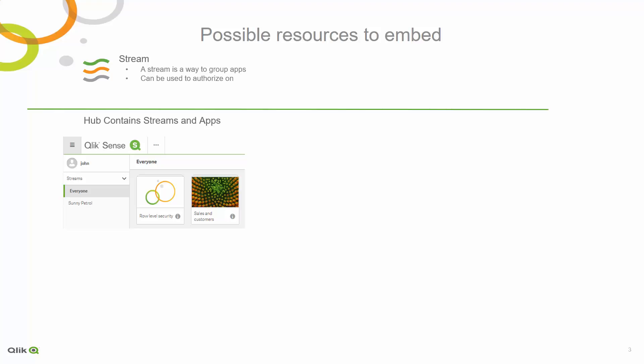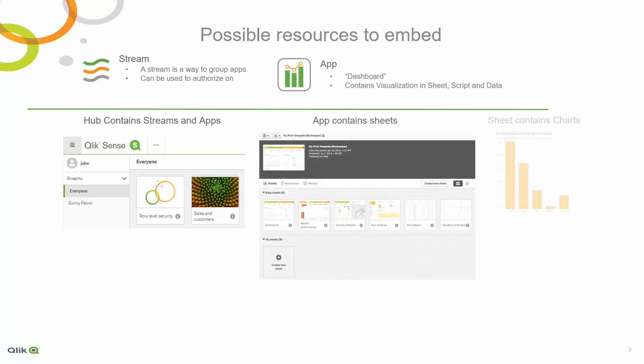The beauty of Qlik is that it allows you choices for your integration. You can choose the level of web integration according to your business requirements. On the client side, you can choose to use our Qlik client or you can create your own. If you choose to use the Qlik Sense client, you have the following options: you can integrate the Qlik Sense Hub, an app, a sheet, or individual charts.